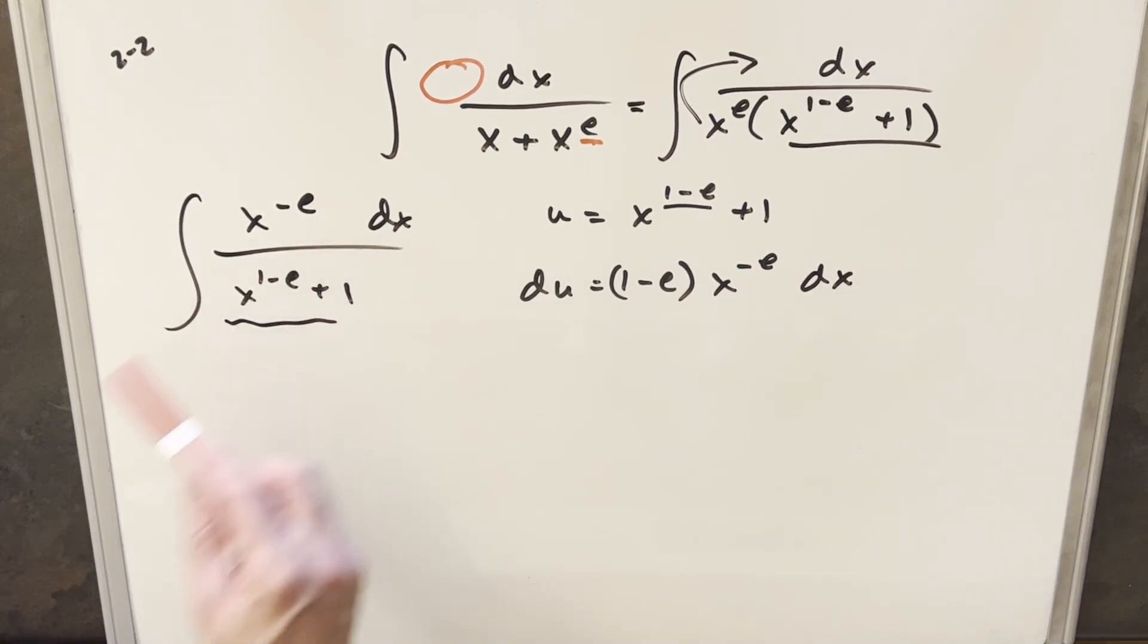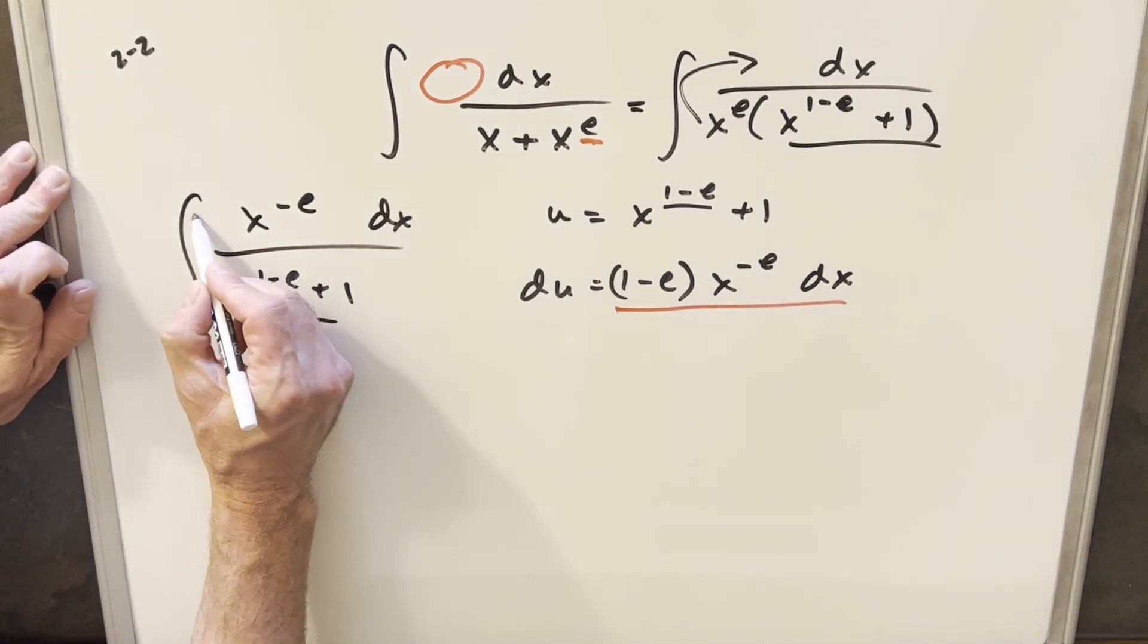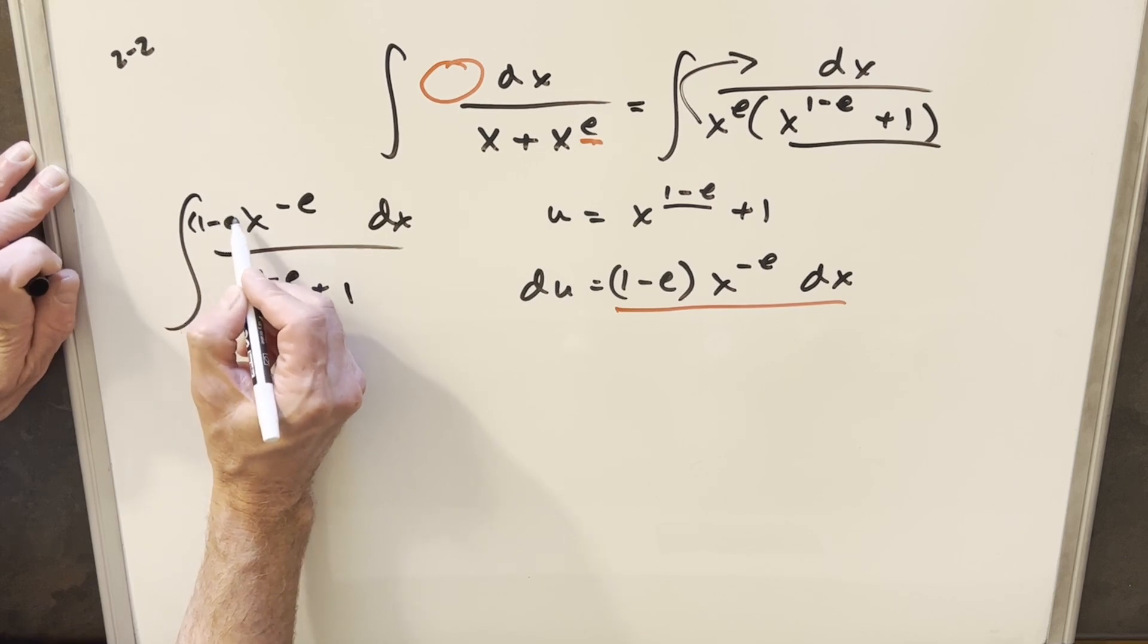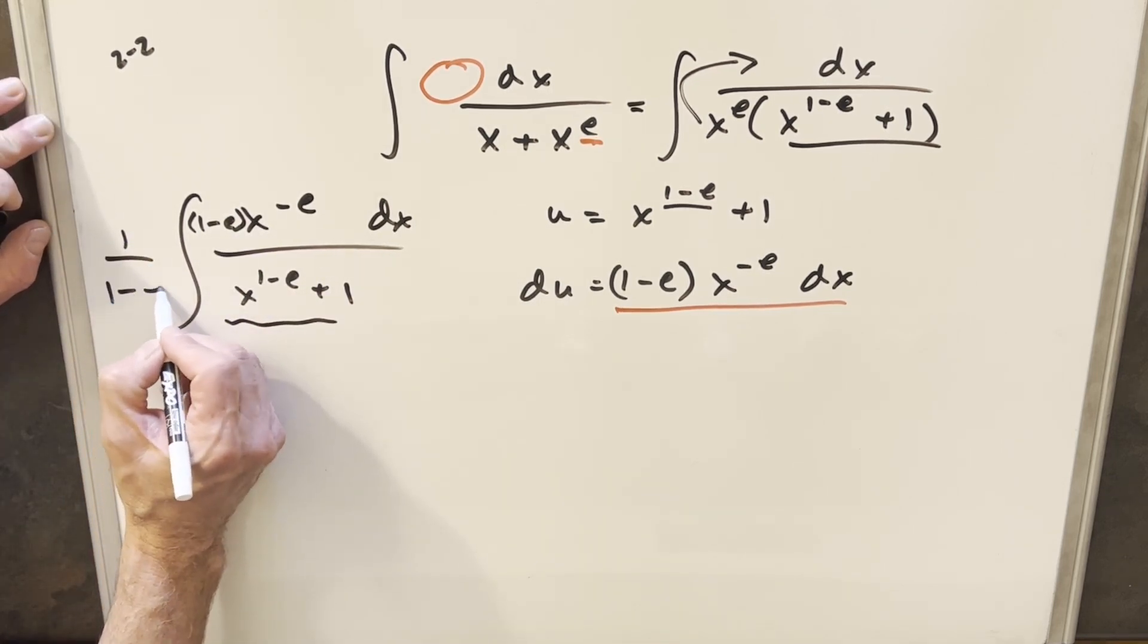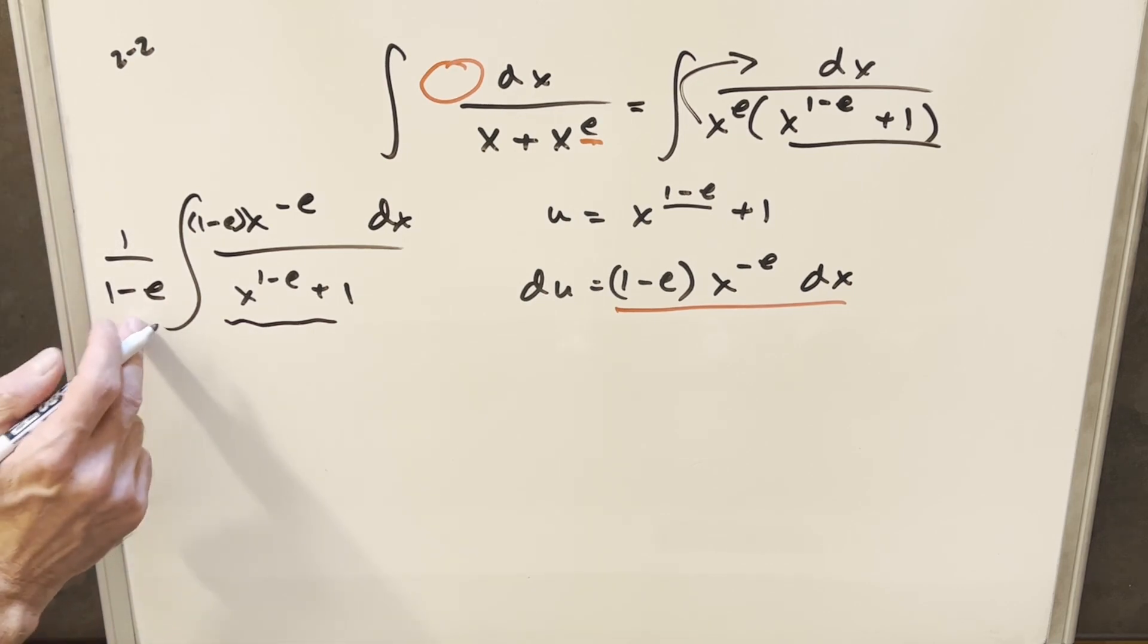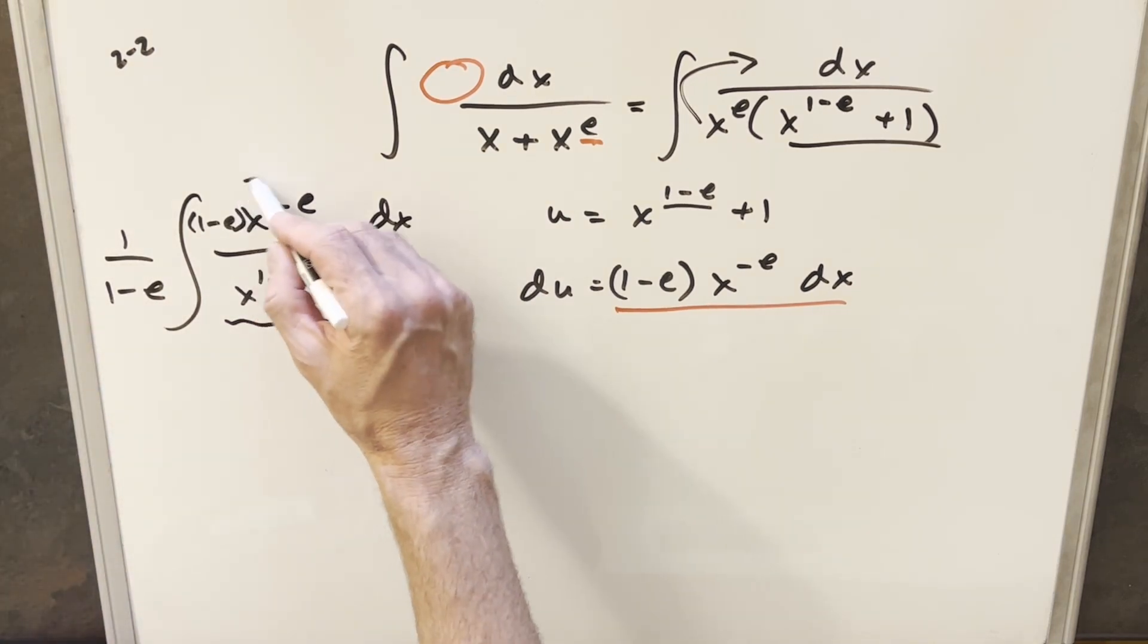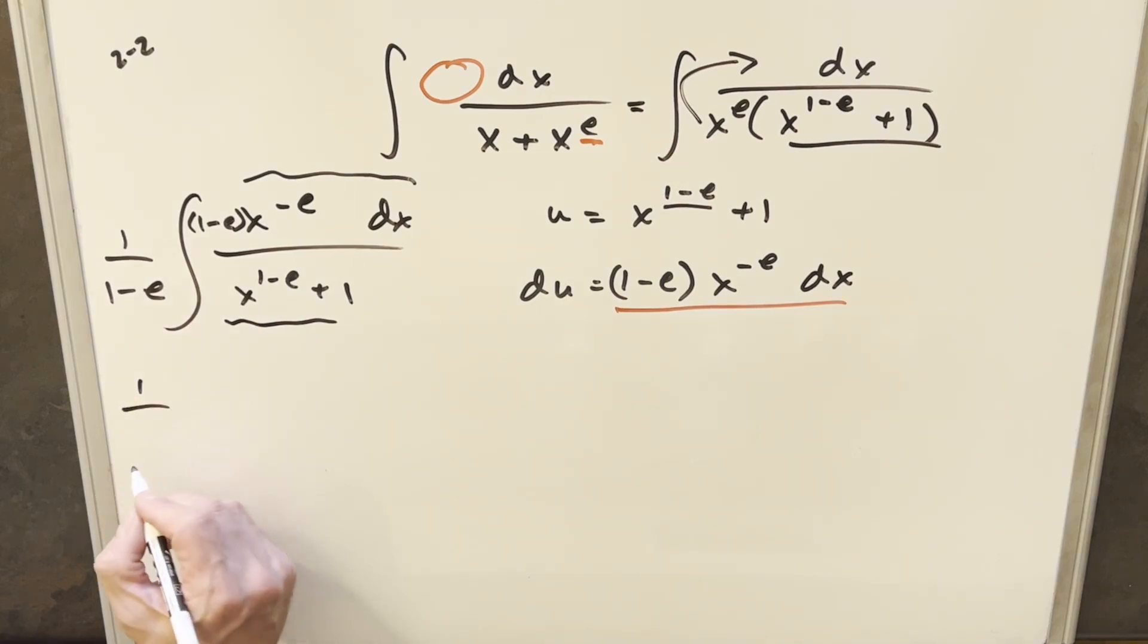And then you'll notice our numerator is actually really close to what we have here. And so what I'm going to do is I'm just going to make this match by multiplying in here carefully times one minus e. But then I'll also divide by one minus e out front. Again, one minus e is just a constant value. And now we have our du value up here exactly. So I'm going to substitute.